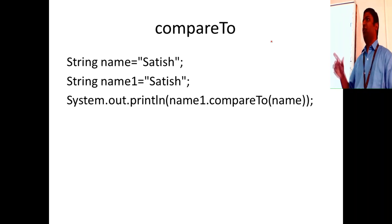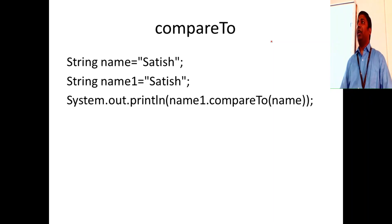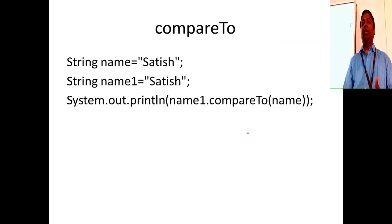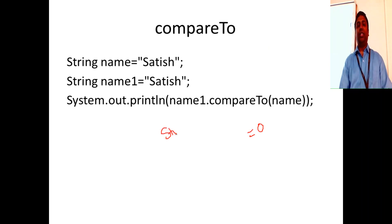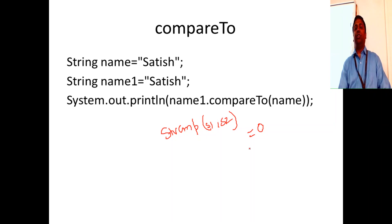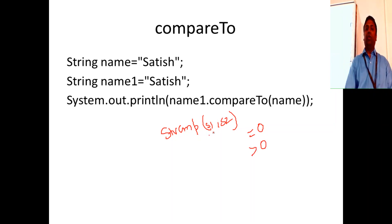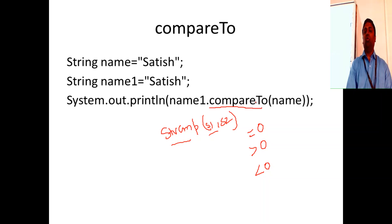In C++ we use `strcmp`, which returns three different values: zero when strings are equal, greater than zero when the first string is greater, and less than zero when the first is lesser. In Java, the equivalent is `compareTo()` with capital T. If `string1.compareTo(string2)` returns zero they are equal; greater than zero means string1 is greater; less than zero means string1 is lesser.